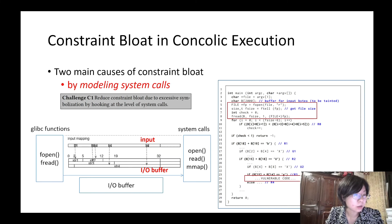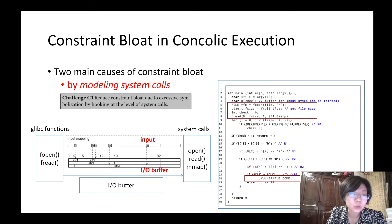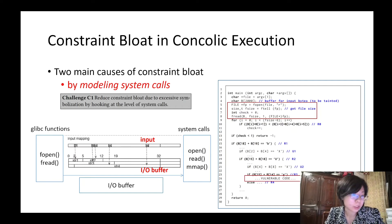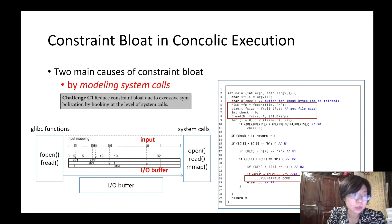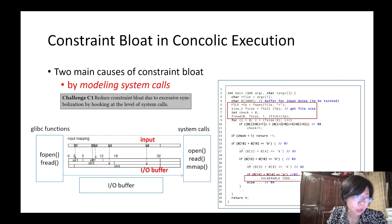What are the challenges of concolic execution? After some observations and analysis, we found out that there are two known causes of constraint bloat. One is by modeling system calls, and the other is by irrelevant branches. We will use a simple example, as shown on the right side of the screen, to show how these two causes influence the efficiency of concolic execution by introducing constraint bloat. For the first cause — constraint bloat introduced by modeling system calls.